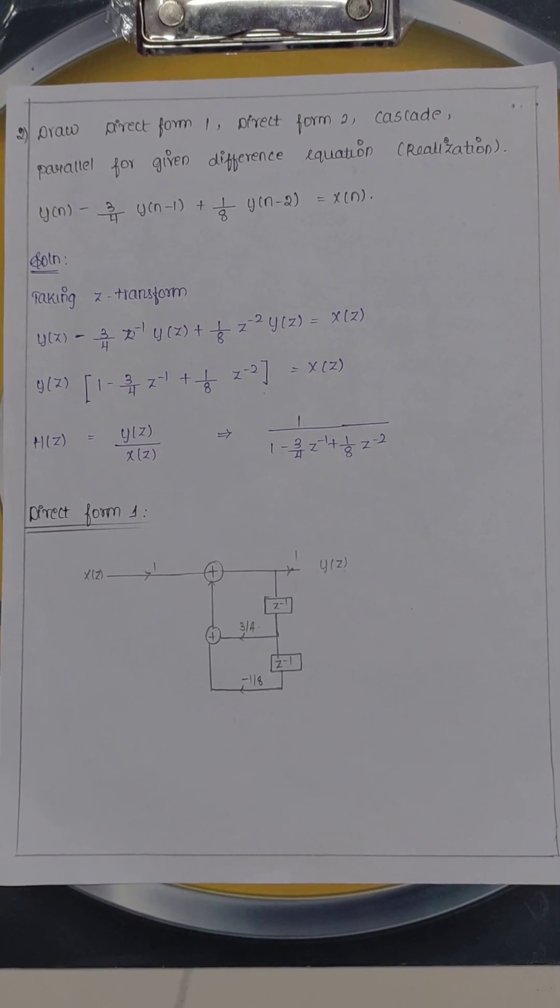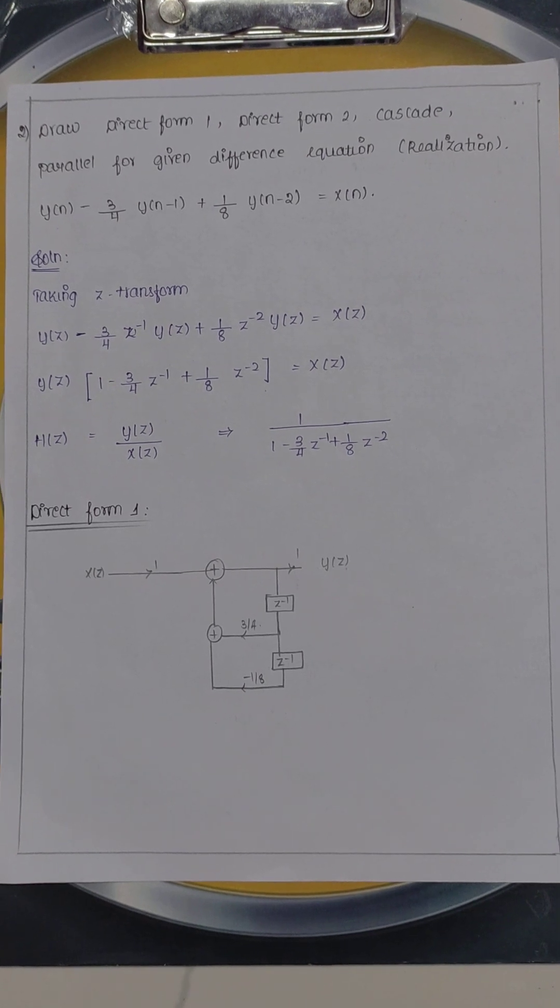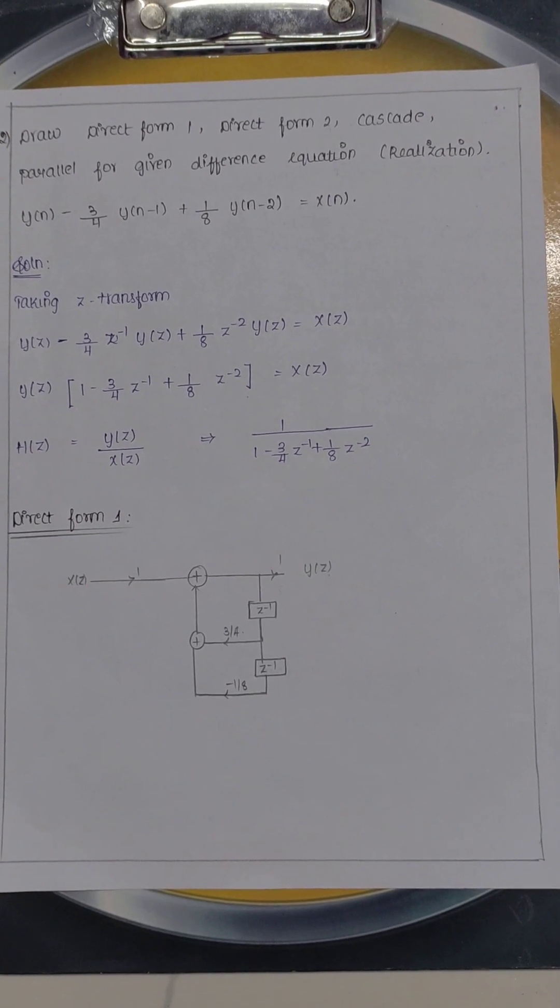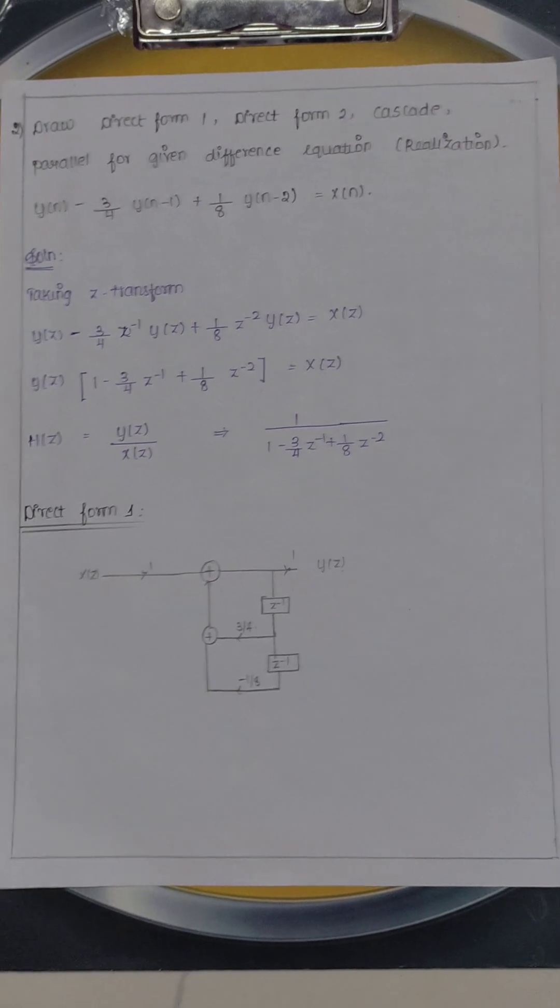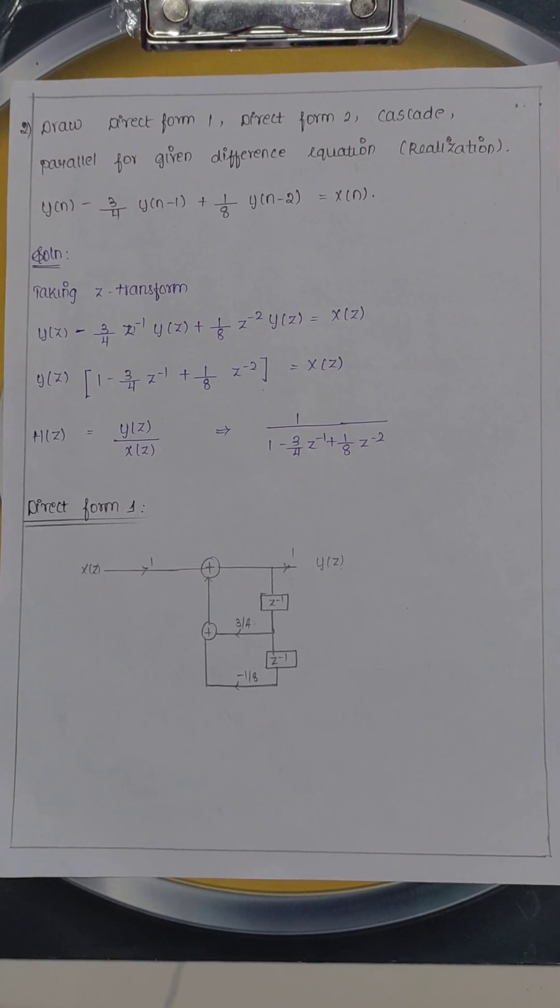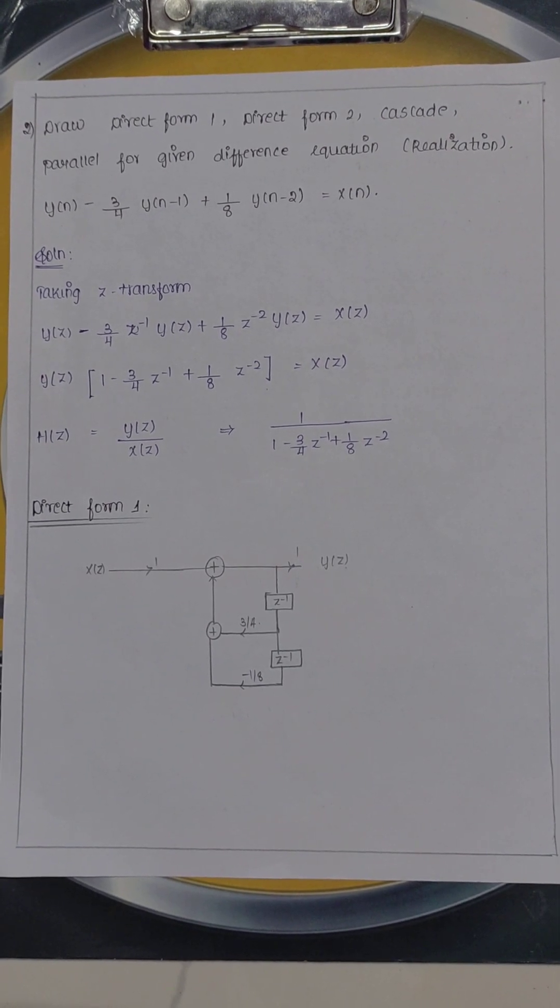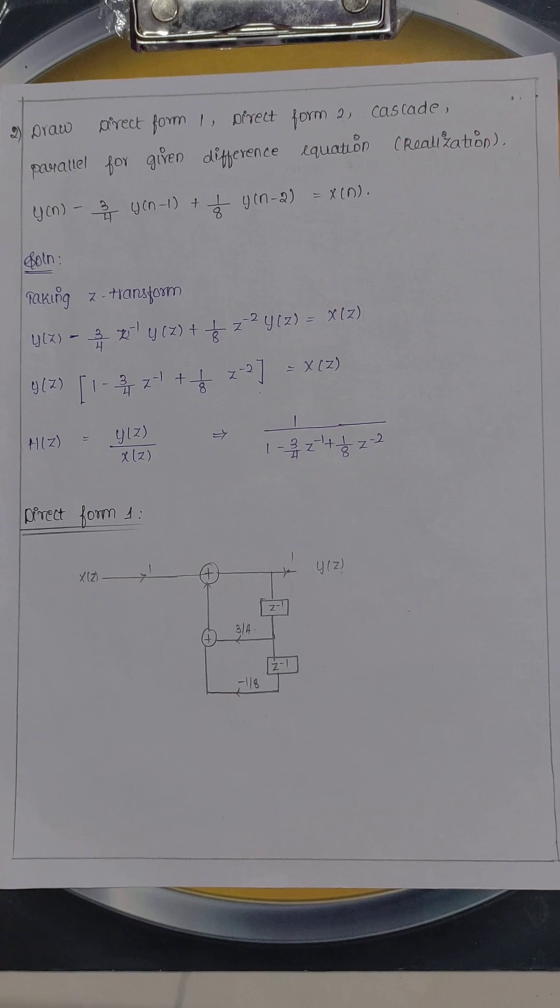Next, the multiplier is 1 minus 3 by 4 plus 1 by 8. So put the multiplier value as 1. Instead of minus 3 by 4, you have to enter plus 3 by 4. Instead of plus 1 by 8, you have to write minus 1 by 8. Then adders, in between there are 2 adders. So connect the adders then join this. This is called direct form 1.